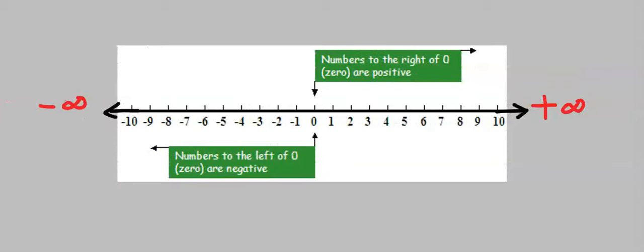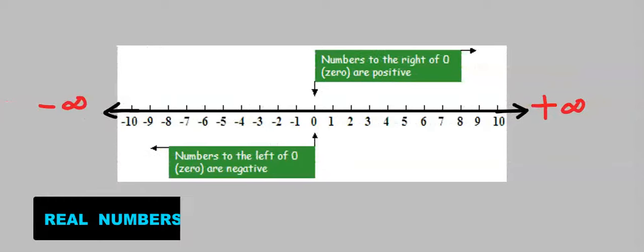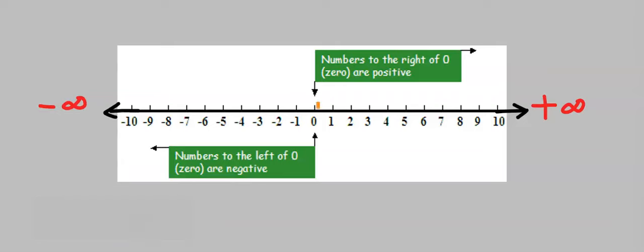All the numbers that can be found on a number line are known as real numbers, including zero.